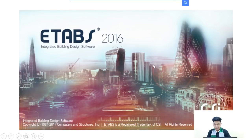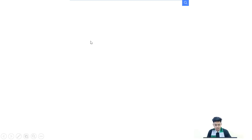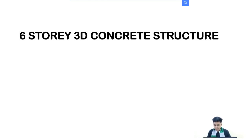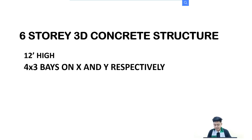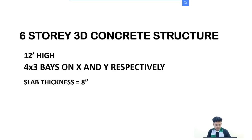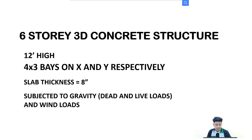Hello, Wizards. So in this video, I will show you how to quickly model and analyze a concrete structure using ETABS 2016. The building will have 6 stories each with 12 feet in height. The building will have a 4 by 3 base in X and Y respectively with lengths 22 feet and 18 feet respectively. The slab thickness will be 8 inches and the building will be subjected to both gravity and wind loads. Our goal is to show the reaction and the deformed structure.